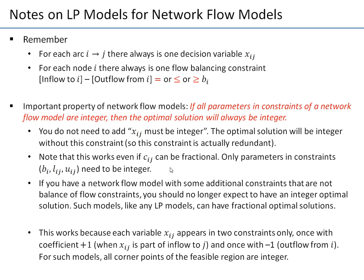This integer property works only for pure network flow models. If you add constraints that are not standard network flow constraints — for example, requiring one flow to be at least 50% of another flow — those are not in the standard inflow-minus-outflow format. Adding such constraints means you should no longer expect an integer optimal solution; such models can have fractional optimal solutions.